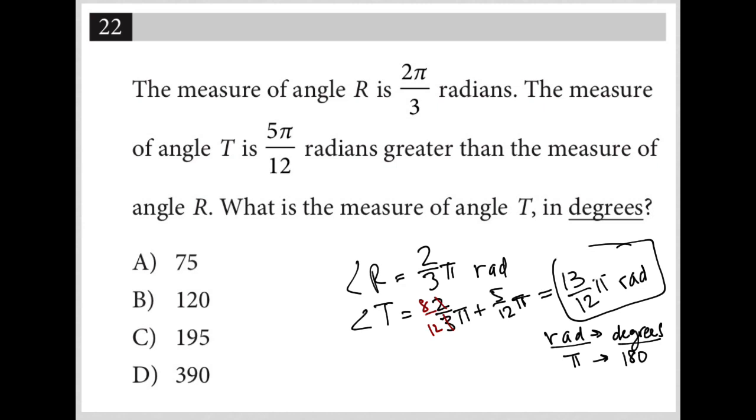So if I take, and I'm going to go up here for more space, I take my 13/12, and I'll put π in the numerator this time, 13π/12, and I multiply that by π on the bottom and 180 on top, right? Because it's π radians on bottom. I get to cancel out the π's here.